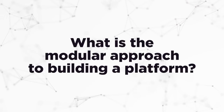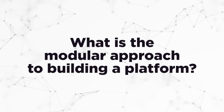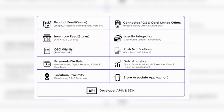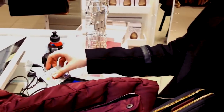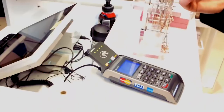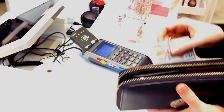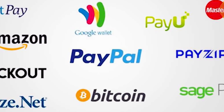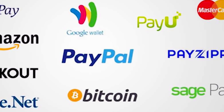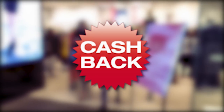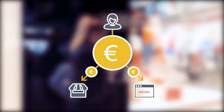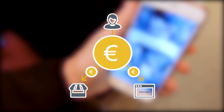What is the modular approach to building a platform? Raincheck is comprised of 10 modules. The payment module is integrated with banks and payment APIs and will serve the purpose of conducting payments and cash-back services, alongside offering split payments and digital receipts.